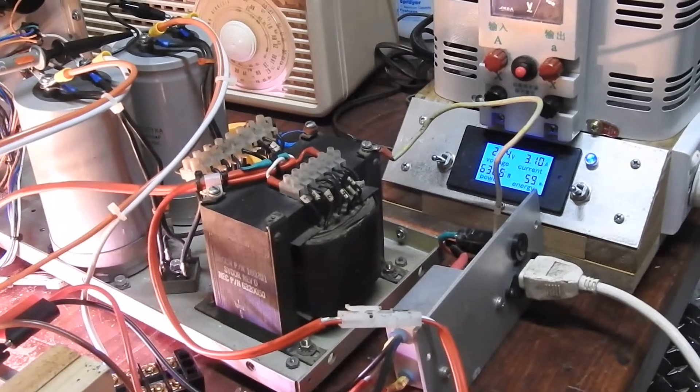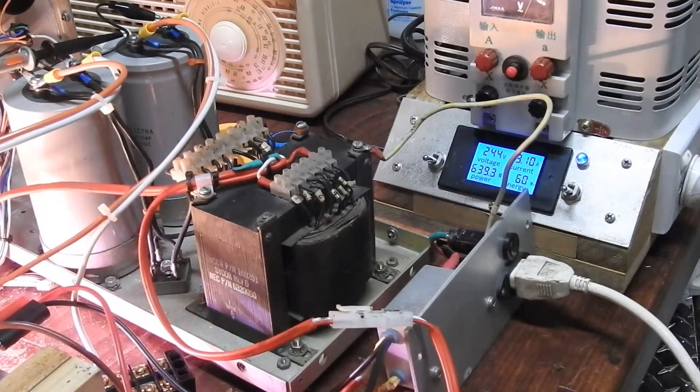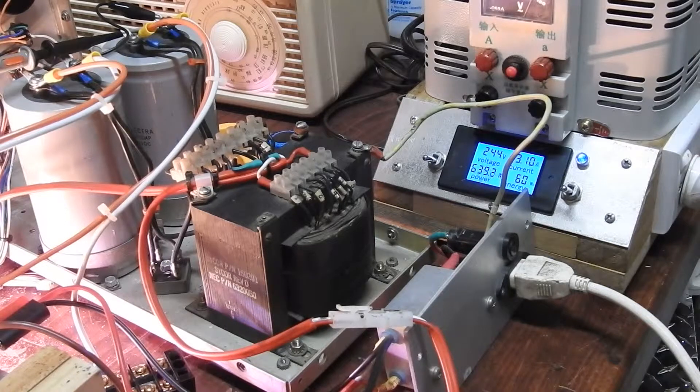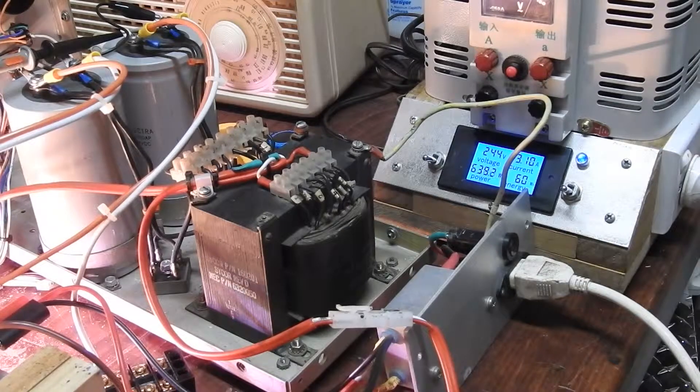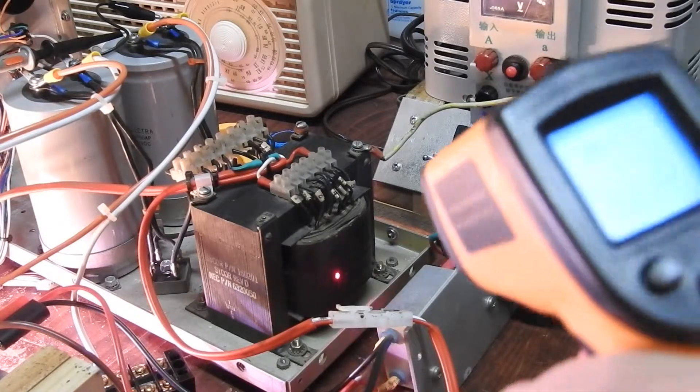And the power meter on the variac says we're sticking 639 volt-amps in and we know we're taking 500 out, so that represents about 76% efficiency in the transformer. Let's see how hot it's getting.